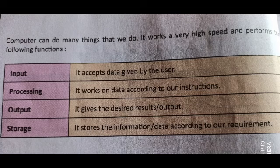The third function of a computer is output — it gives us the desired result. The result we get after processing is called the output. When we enter the data, it is processed inside the CPU, and after processing, we get the result on the screen of the monitor — that is the output. The fourth function is storage. After processing and getting the desired result, it stores the information and data according to our requirement.